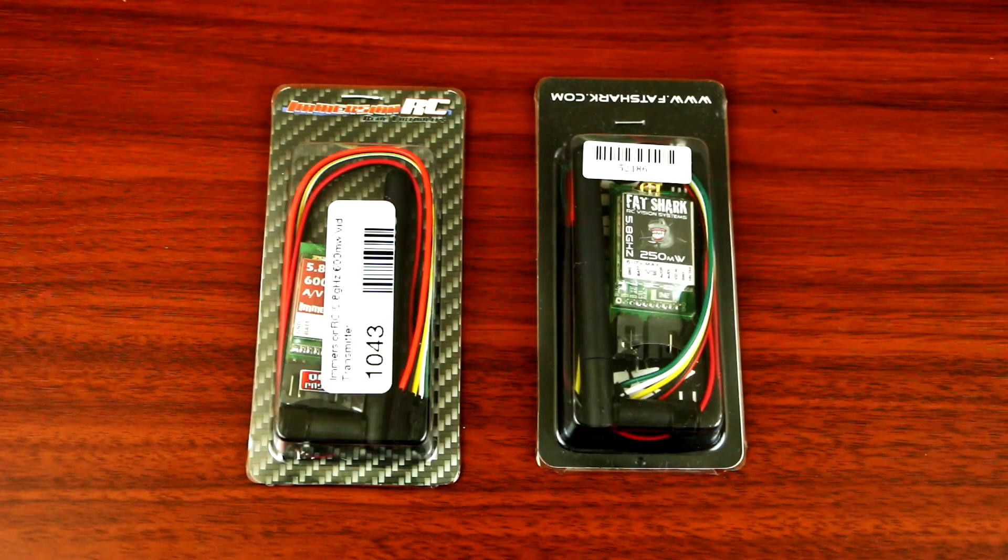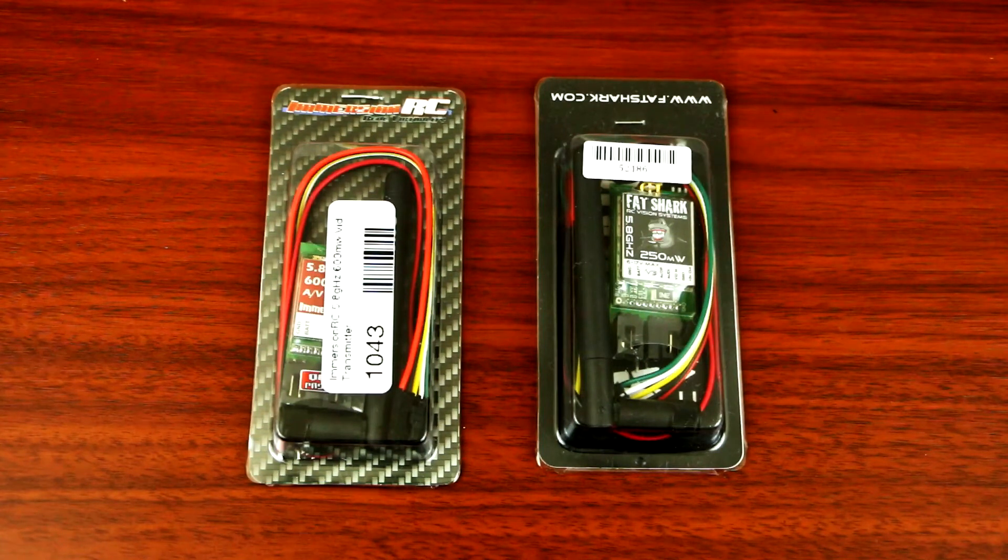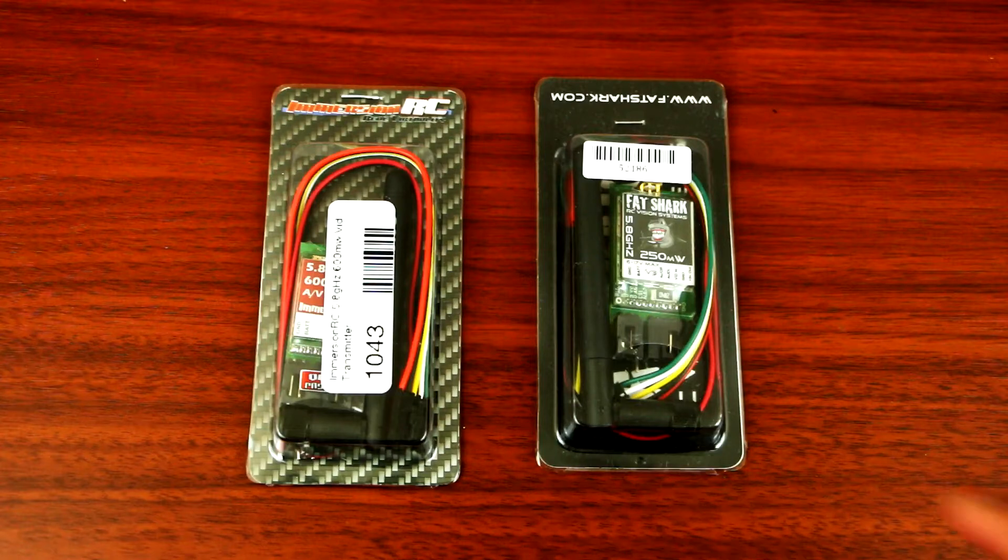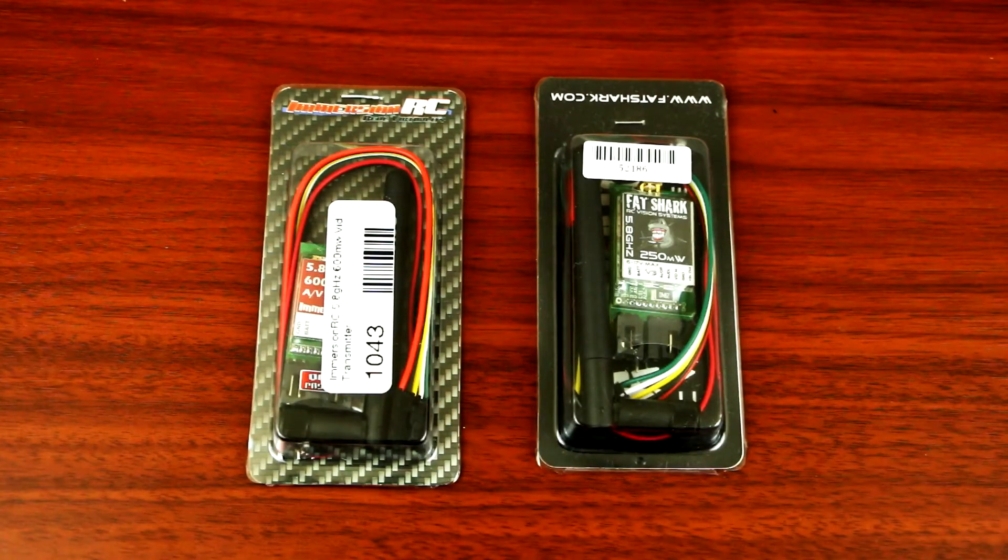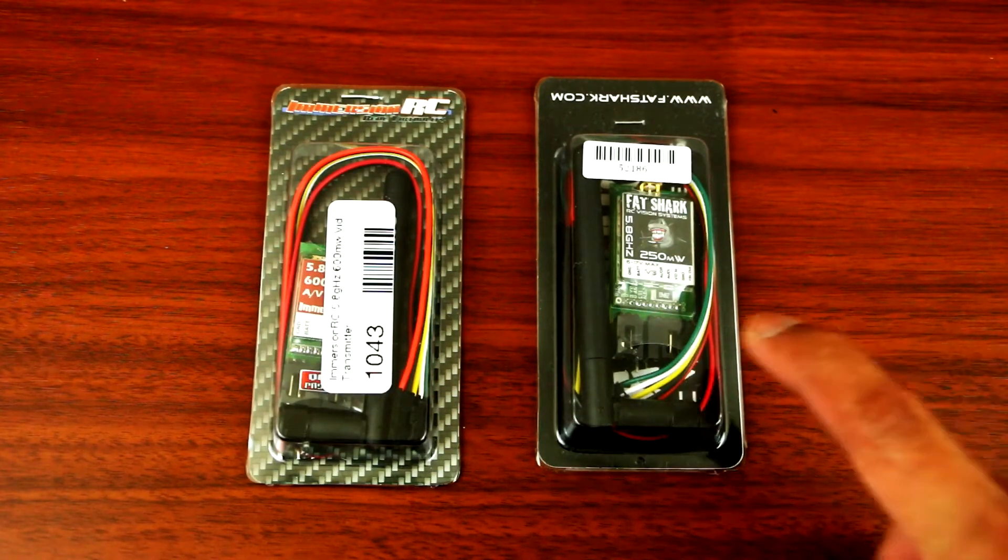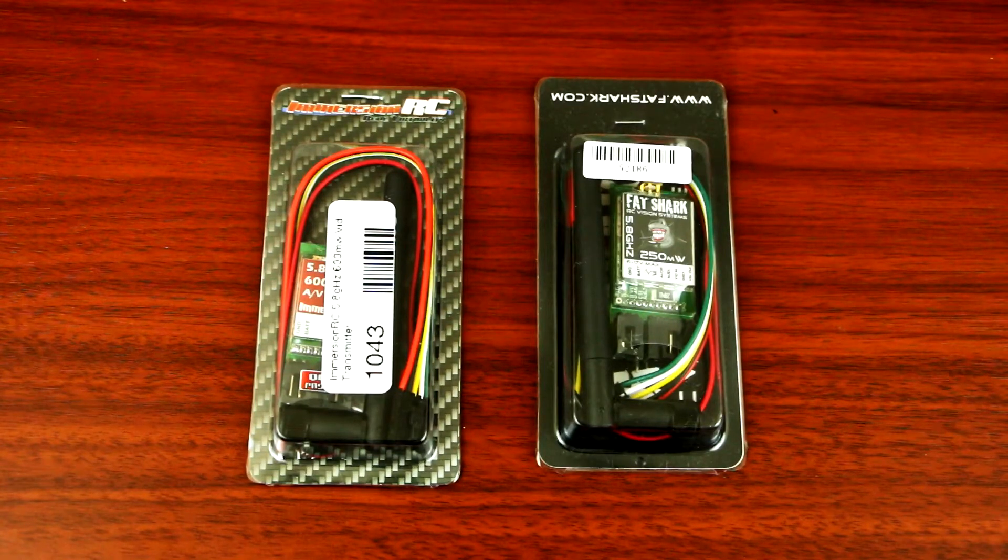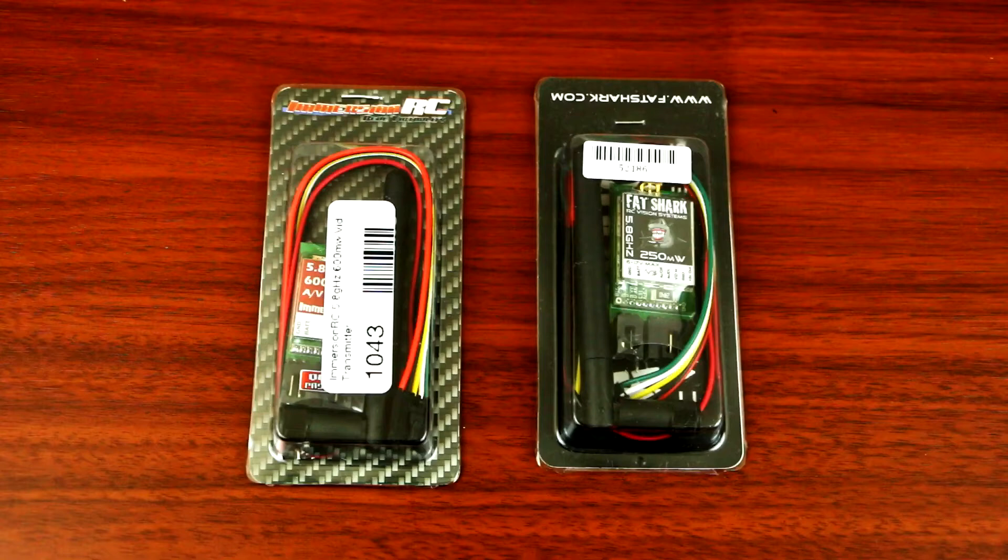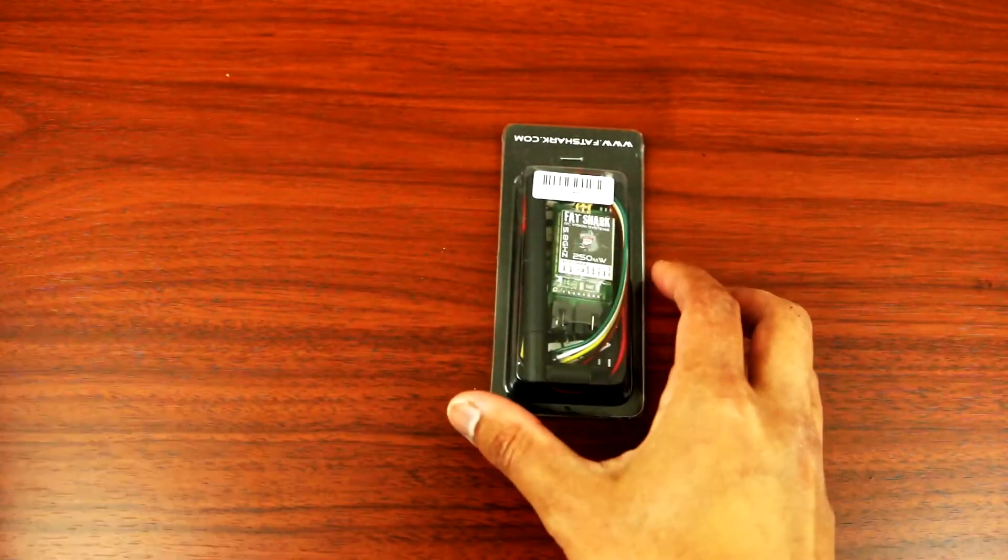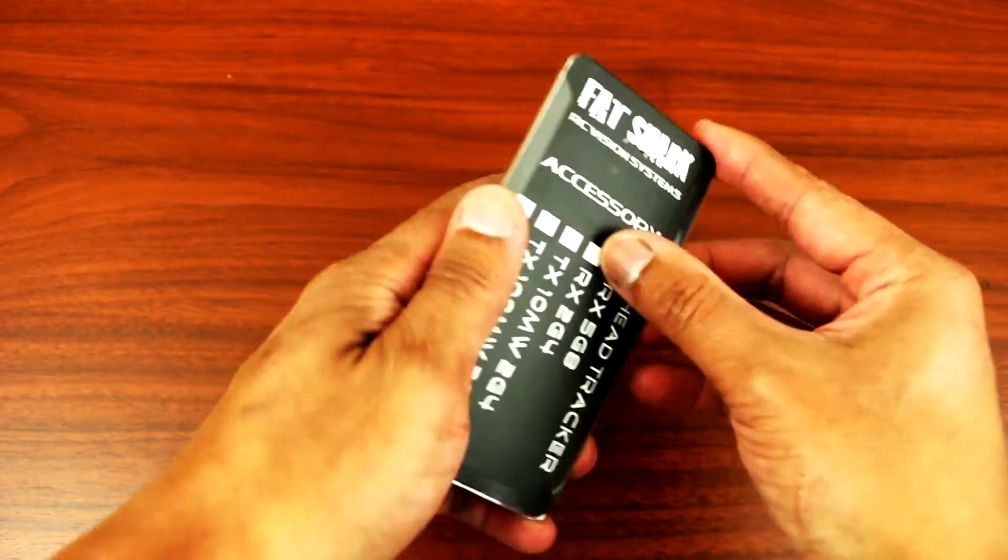Hey, what's up YouTube. Today I'll be doing a transmitter comparison. On the left I have the Emerson RC 600 milliwatt, and on my right I have the FatShark 250 milliwatt. I'll be doing a comparison of the weight, size, and what it comes with.